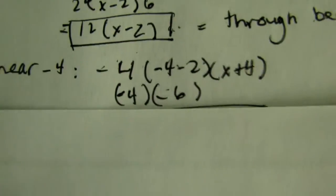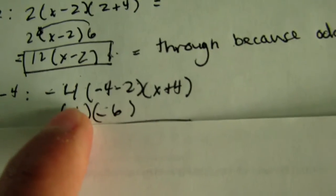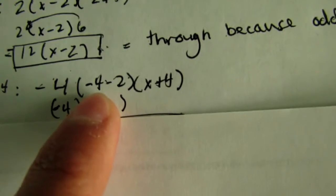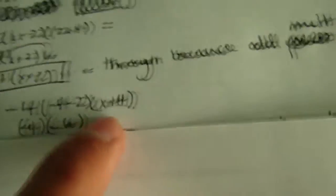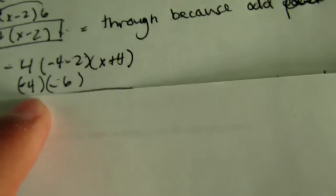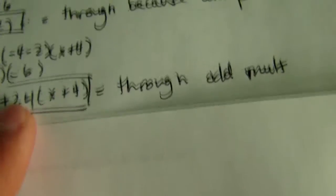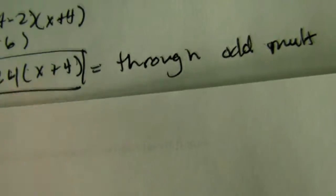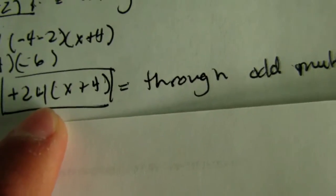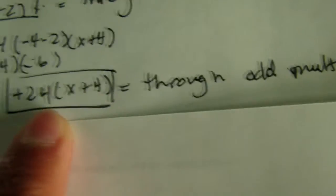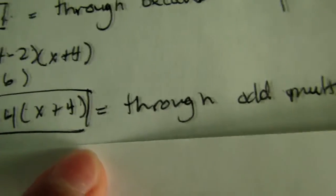Now, to find near negative 4, we put negative 4 right there, and negative 4 in for that x, and not right there, because we do not want that to equal zero. So, we get negative 4 times negative 6, and that should equal a positive 24, because a negative times a negative is a positive. So, 24 times (x + 4), and it goes through, because it's a 1 multiplicity.